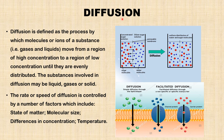Now we'll look at the various types of passive transport, starting with diffusion. Diffusion is defined as the process by which molecules or ions of a substance — gases and liquids — move from a region of high concentration to a region of low concentration until they are evenly distributed. The substances involved may be liquids, gases, or solids. The rate of diffusion is controlled by several factors, including the state of matter. Diffusion is fastest in gases and slowest in solids.